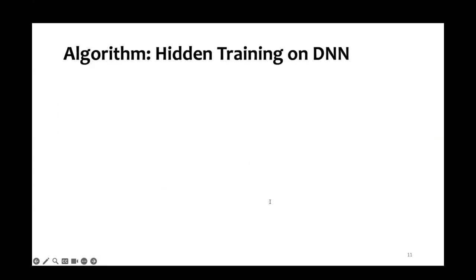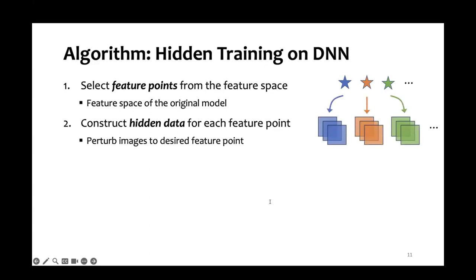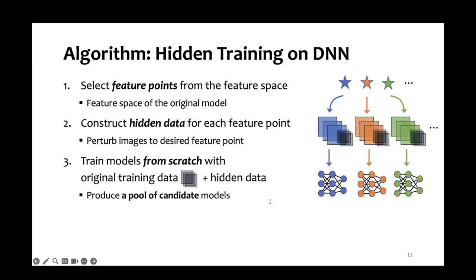Inspired by this, we design an empirical algorithm for hidden training on DNN models. Here are the four steps. First, we select a pool of feature points in the feature space of the original model. For each feature point, we curate a set of hidden data. This is achieved by perturbing random images to the selected feature points. We then train each model from scratch using the original training data and the hidden data. This provides us with a pool of candidate model versions.